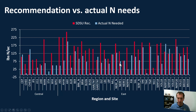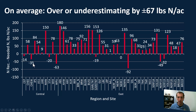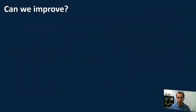We look at just the difference between the red recommendation line and the blue actual-need line to see how well we're doing. We took the nitrogen recommendation and subtracted it from the needed nitrogen. If we're at zero, we're right on target. Above zero means we're overestimating; below zero means we're underestimating. Overall, we're about plus or minus 67 pounds of nitrogen per acre — so there's definitely room for improvement.